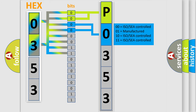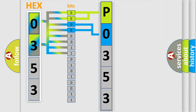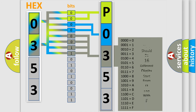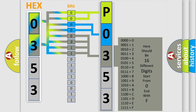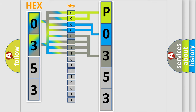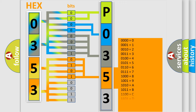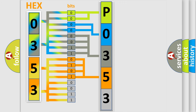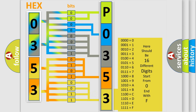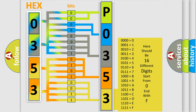The last bits of the first byte define the third character of the code. The second byte is composed of a combination of eight bits. The first four bits determine the fourth character of the code, and the combination of the last four bits defines the fifth character. A single byte conceals 256 possible combinations.